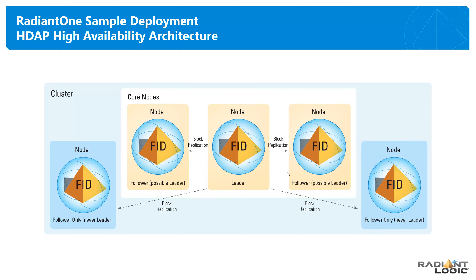All changes to the HDAP data are done on the leader node and then replicated out to follower and follower-only nodes. Follower-only nodes are a special kind of lightweight node — they never become a leader and don't require the additional functions of a leader or follower node. You can add these to the cluster to handle additional client loads and scale out quickly. Another advantage of deploying a cluster is the ease and speed at which you can scale — once you install Radiant One software on a new machine and indicate you want it to join an existing cluster, the current configuration and HDAP data store information is applied to that new node quickly, becoming operational within minutes.